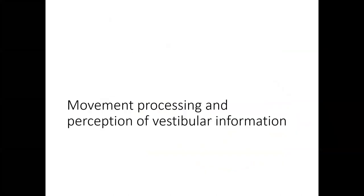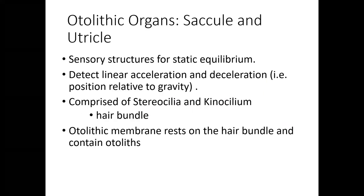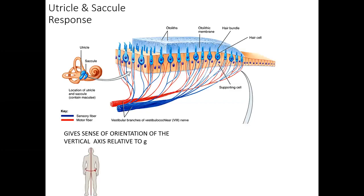The whole idea of the saccule/utricle and the ampulla within the semicircular canals is to detect motion, and they do that by shifting of the receptors. By shifting the receptors, they are able to determine what direction motion is taking place, based off changes of static position or the rate of static positional change. What the saccule/utricle is doing is giving a sense of vertical position for the body.